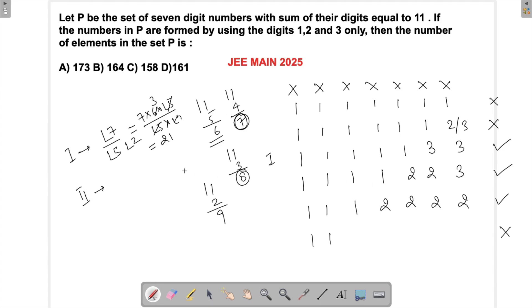Case two with four ones, two twos, and one three: 7! divided by 4! times 2! times 2!. This gives 7 times 6 times 5 times 4! divided by 4! times 4, which equals 105.